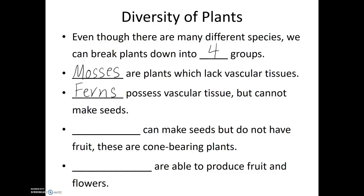The next group of plants are able to make seeds and they do have vascular tissue. However, they do not produce fruit or flowers. These are the cone-bearing plants and they are known as gymnosperms. And then finally, we have the last group of plants. They have vascular tissue, they can make seeds, and they are able to produce fruits and flowers. These are known as the angiosperms.